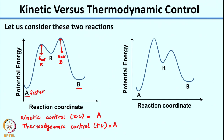Now for the second reaction coordinate diagram: under kinetic control, the barrier is much smaller for formation of B, so the major product under kinetic control would be B. Under thermodynamic control, A is more stable, so the major product is A - a different product. This means you can actually tune which product is formed by running the reaction under kinetic or thermodynamic control. You can design reactions to get one product over the other.